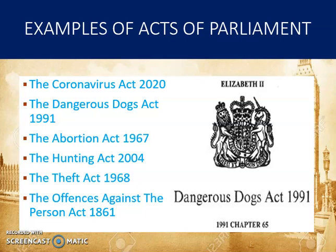Before we look at the process that a bill goes through to become an act of parliament, it's useful to remind ourselves of some examples of acts of parliament. A recent example, in the media a lot at the moment, is the Coronavirus Act 2020. This is an act of parliament of the UK that grants the government emergency powers to handle the 2020 coronavirus pandemic. We know from living through lockdown that the act allows the government discretionary power to limit or suspend public gatherings, to detain individuals suspected to be infected by COVID-19, and to intervene or relax regulations in a range of sectors to limit the transmission of the disease.